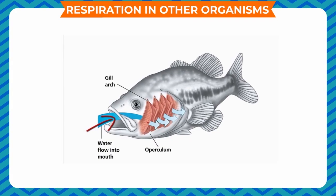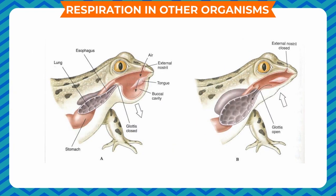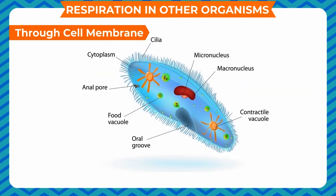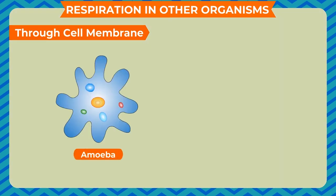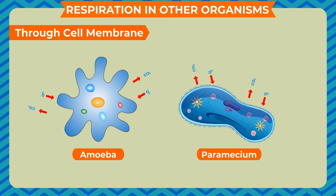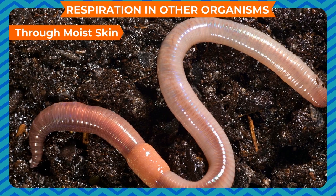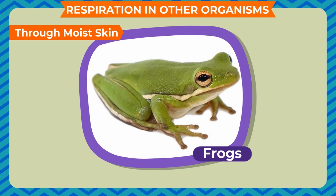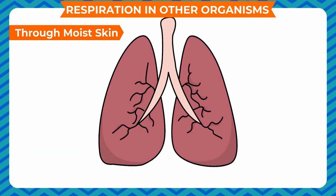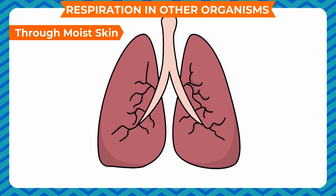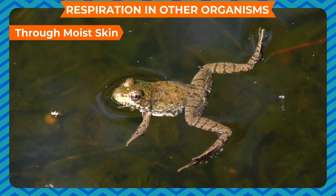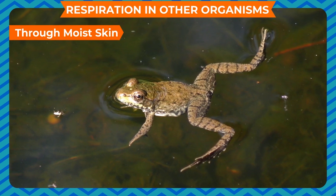Respiration in other organisms: Different animals respire through different organs or body parts. Unicellular organisms like amoeba and paramecium take in oxygen and give out carbon dioxide through their general body surface — through the cell membrane. Organisms like earthworms, leeches, and frogs respire through their moist skin. Although frogs use lungs for respiration on land, oxygen is also diffused through their moist skin when they are in water. Their skin has a rich vascular supply.